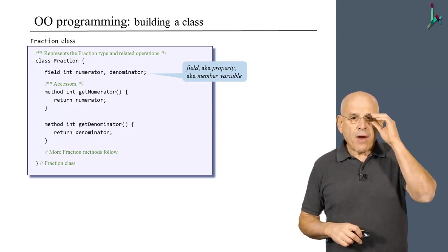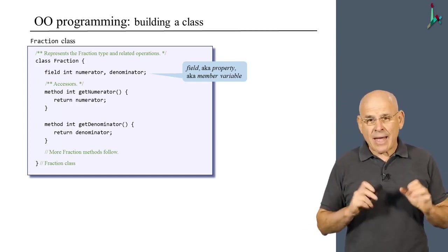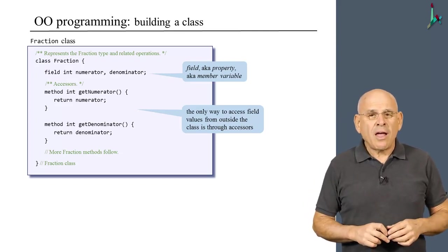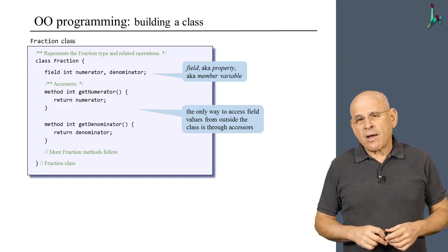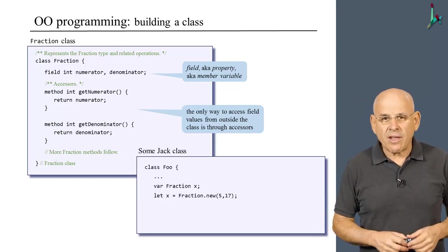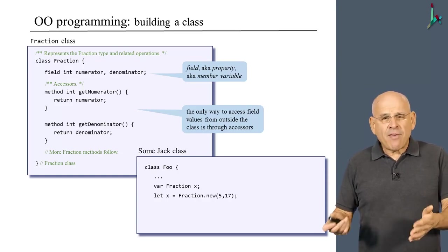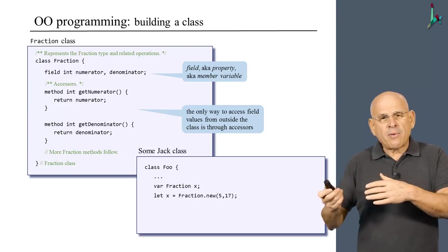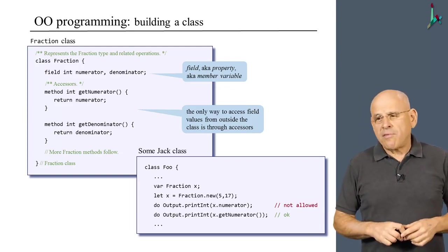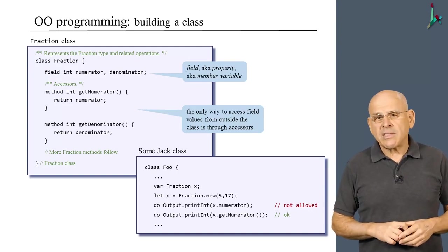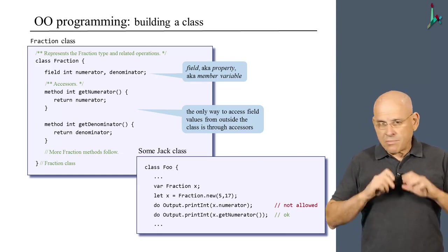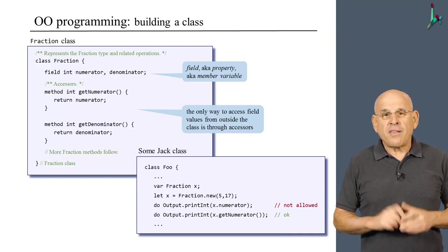Okay, moving along, I show you here two accessors that I wrote in order to facilitate access to these field values, to the values of the current object. Now, this is common programming practice in object-oriented programming. But in Jack, it's absolutely necessary because the only way to access field values from outside the class is through accessor methods. So let me give you an example where this principle comes to play. Suppose you want to create the fraction of 5 over 17, and you want to access the numerator of this fraction. Well, in a language like Java, you could have done this. If the member variable that represents numerator and denominator were public, you could have done x dot numerator and get the value of this field. But in Jack, this kind of access is disallowed. And the only way to achieve the same purpose is to go through an accessor method, which is good programming practice anyway. So that's how we do things in Jack.